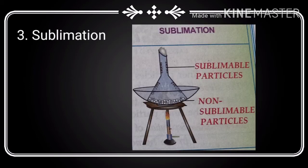The third method is sublimation. This method is based on the difference in sublimable and non-sublimable nature of solids. Sublimable solids are those substances which sublime, meaning they turn directly into vapor on heating without converting into liquid. When a solid is directly converted into vapor without converting into liquid, this process is known as sublimation. The vapor on cooling gives back the pure solid, and the non-sublimable solid remains behind.